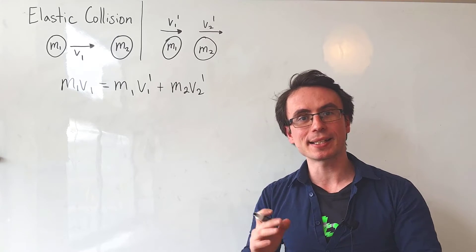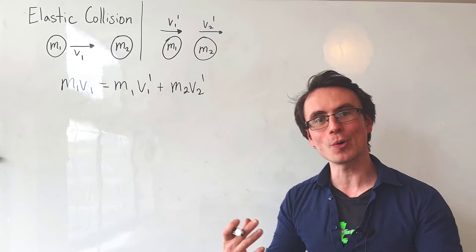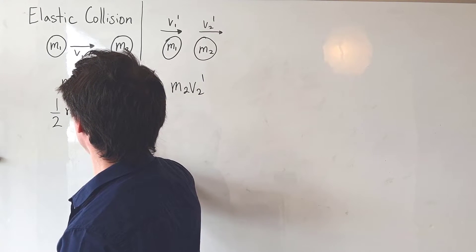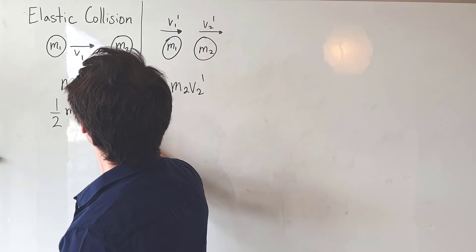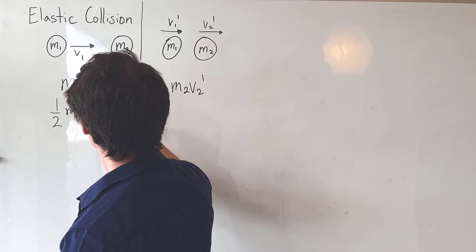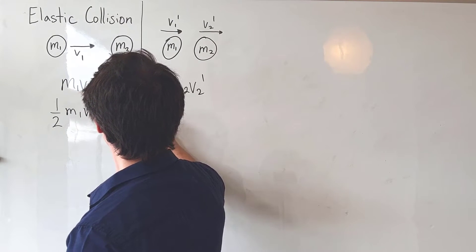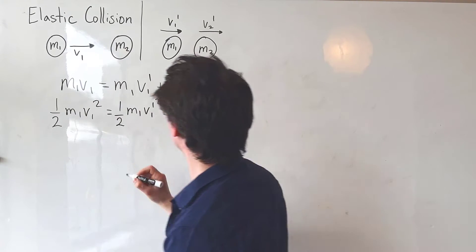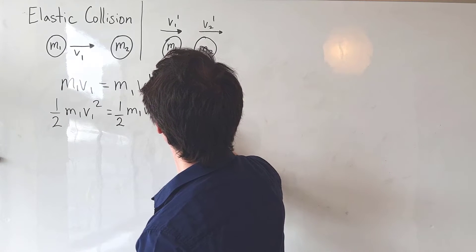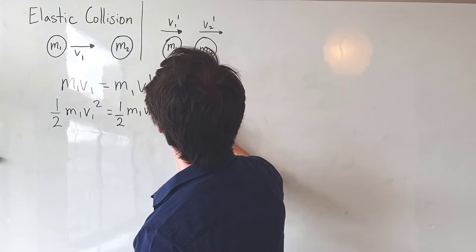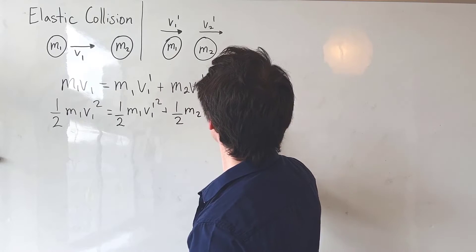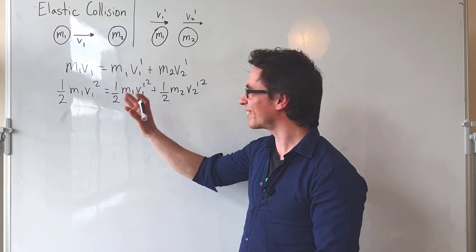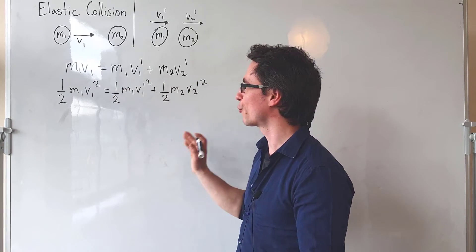Given that this is an elastic collision, kinetic energy is also conserved. So we can say that the initial kinetic energy, one-half m1 v1 squared, will be equal to one-half m1 v1 prime squared plus one-half m2 v2 prime squared. Let's consider the second equation first.